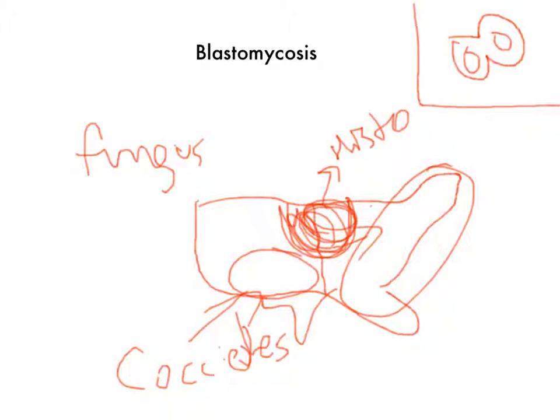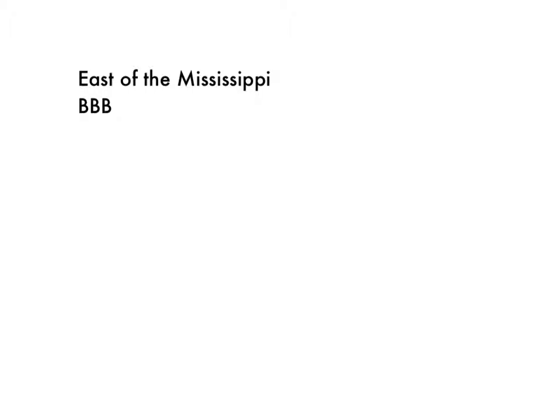Blastomycosis causes granulomatous nodules in the lung, but it can disseminate to the skin and bone. So to wrap up: you see someone who gets pneumonia east of the Mississippi, or they show you a picture of broad-based budding or mention broad-based budding — that's your high-yield clue.